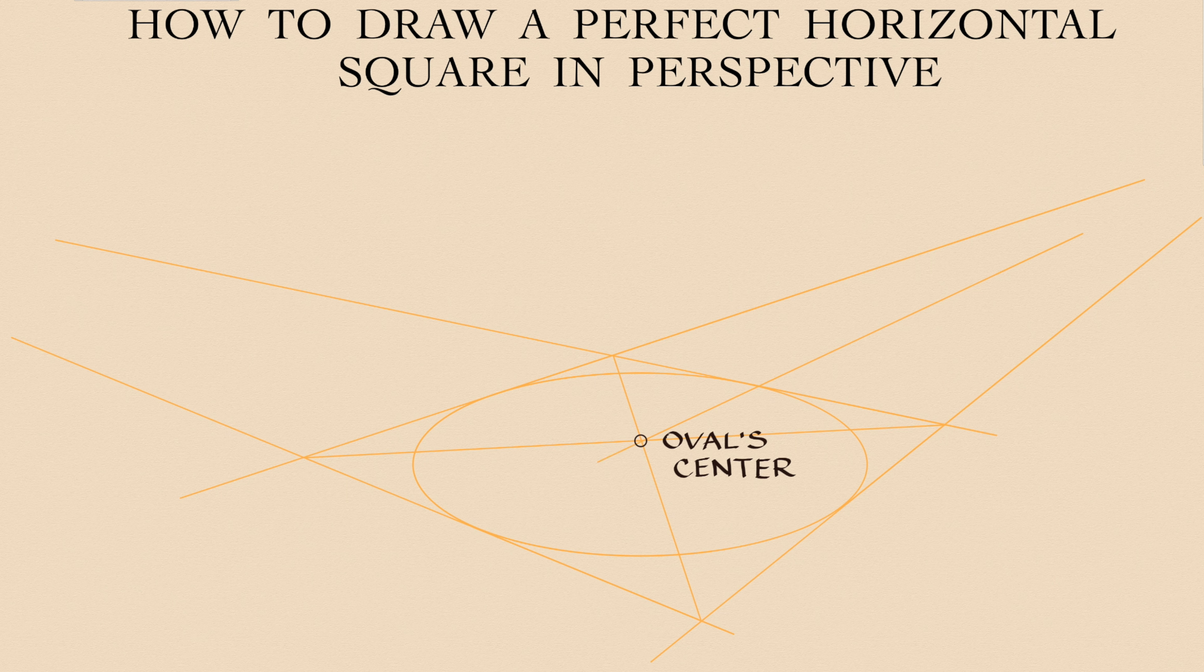The oval's center is found as the cross point of two diagonals of that square. If two vanishing lines cross the oval in the middle of each side of the square, such a square is depicted correctly. All that is left is to outline the perfect square in two point perspective.